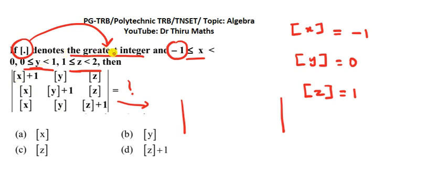The greatest integer function of x is minus 1. Greatest integer function of y is 0, z is 1. Next x is minus 1, next greatest integer function of y is 0, 0 plus 1 is 1.